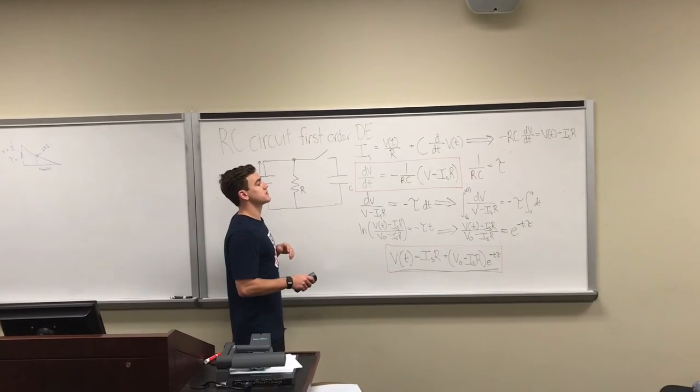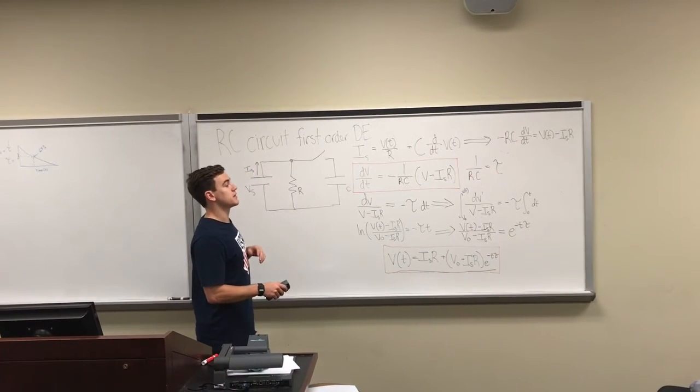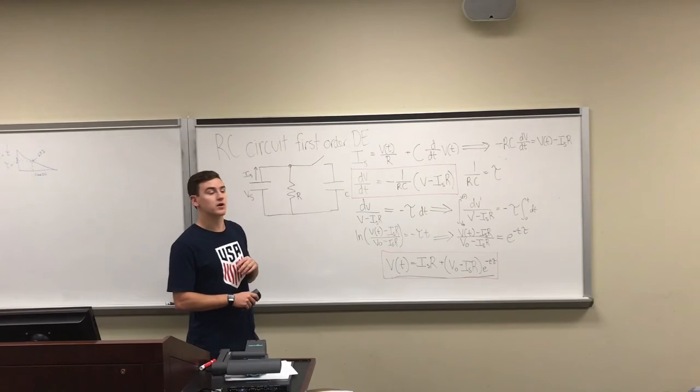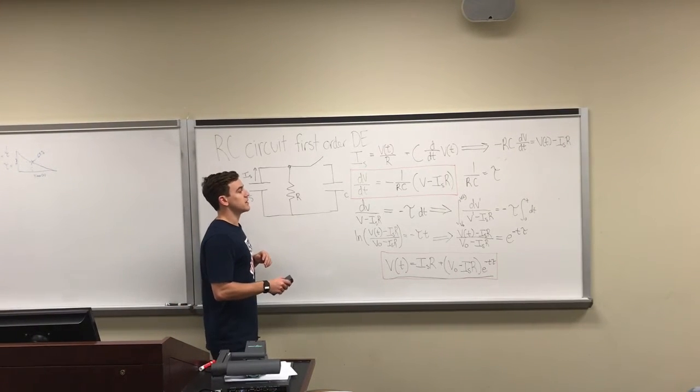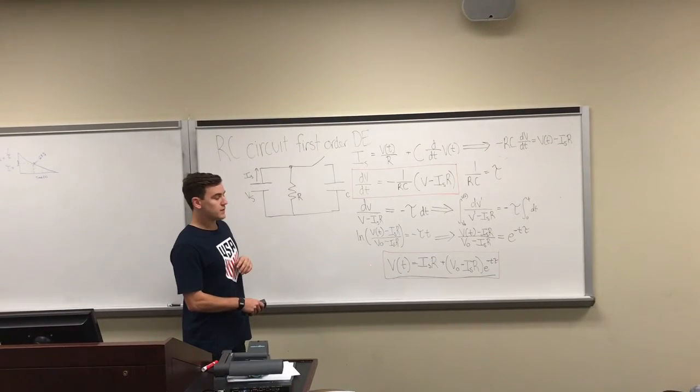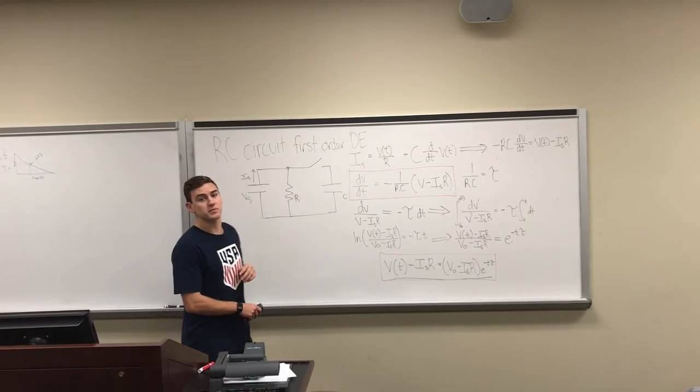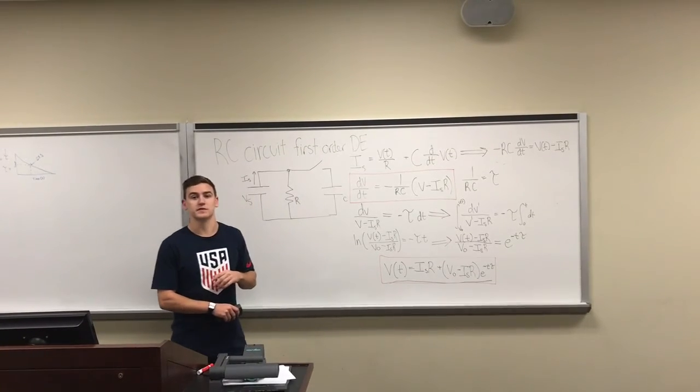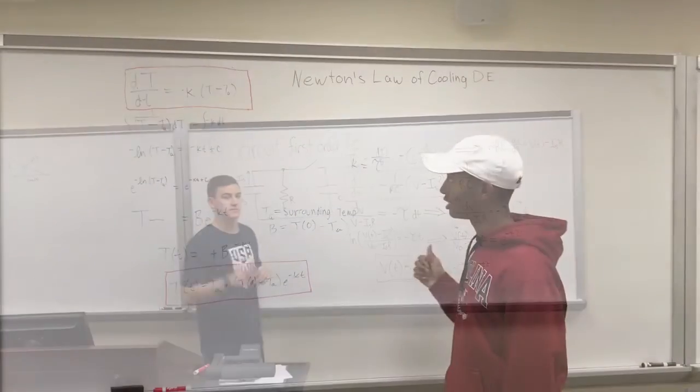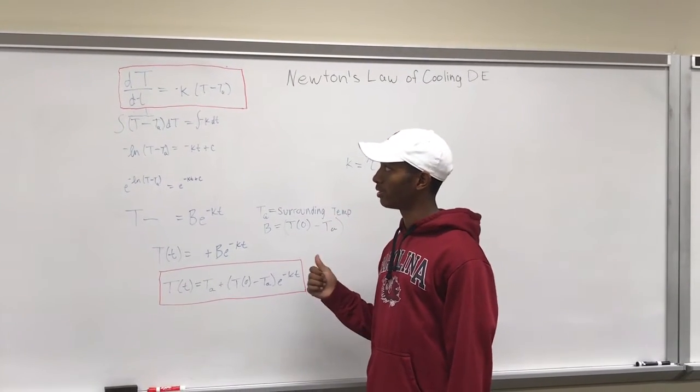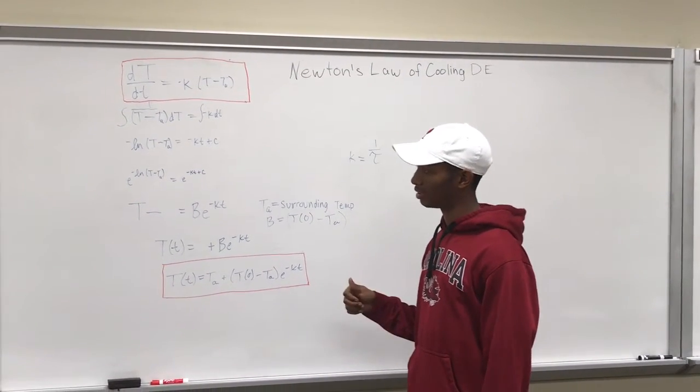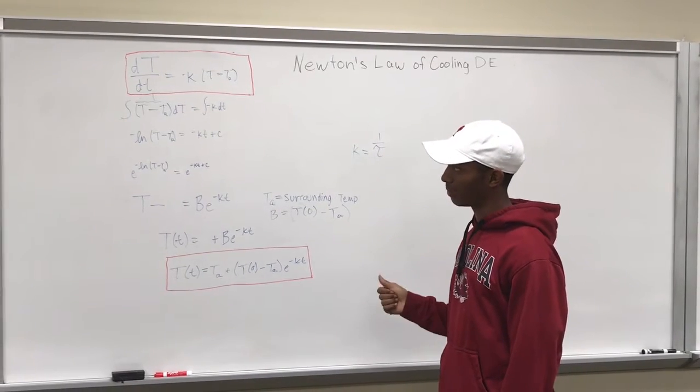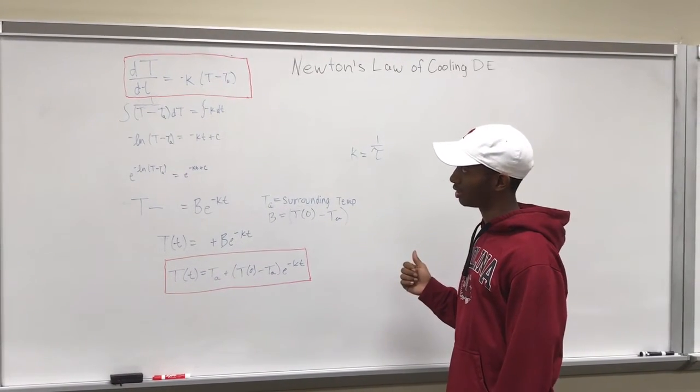As you solve through this differential equation, substituting the time constant as 1 over RC, you eventually end up with a voltage equation, which can then be compared to Newton's Law of Cooling's derivation. In an RC circuit, you're going to use the derivative of temperature over time and compare that to dV/dt in an RC circuit.